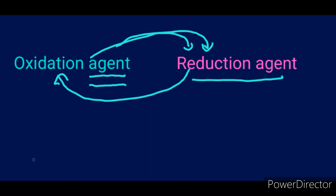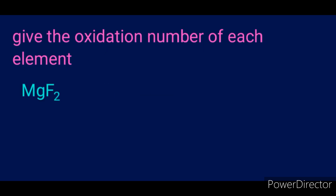Now let's go to the practicals of redox reactions. Before we talk about balancing, let's say you're asked to determine the oxidation number of each element in a compound. You'll use the periodic table. Let's find out where magnesium is.